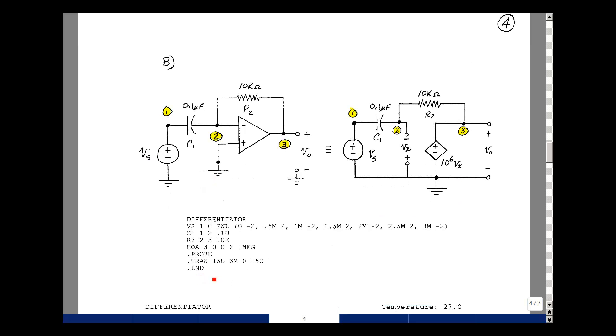So we need a title. I'll call this a differentiator circuit. We need a dot end. We'll describe our schematic. So we have V sub s from nodes 1 to ground, capacitor C1 between nodes 1 and 2, or 2 and 1, and then the resistor between nodes 2 and 3.